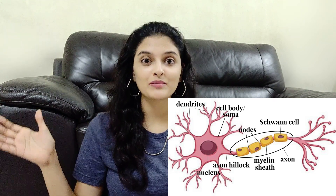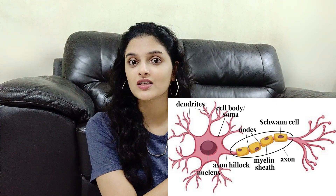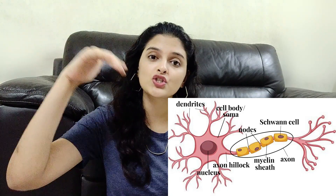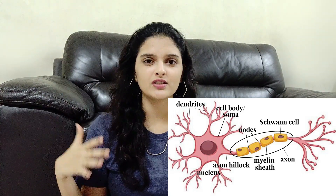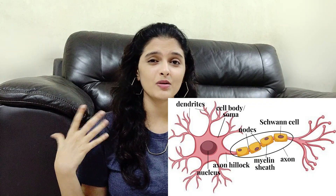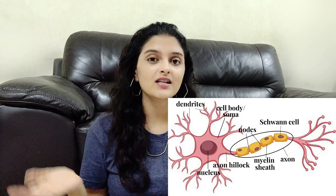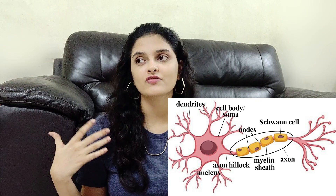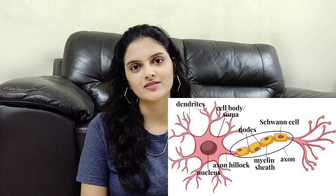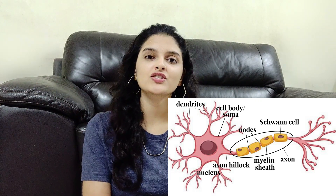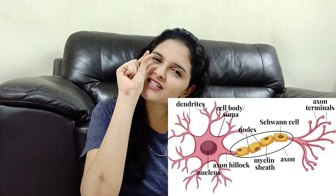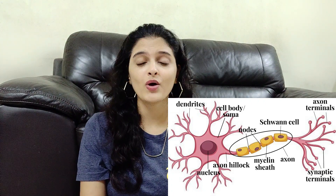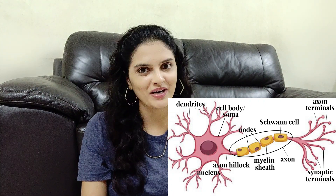When a message travels down the axon, it jumps at the nodes, avoiding the myelin sheath, which lets the message travel faster down the coated axon compared to an uncoated axon. The axon passes these messages to other neurons through the axon terminal. At the tip of the axon terminal there is a tiny knob called the synaptic knob, or synaptic terminal, or terminal button.